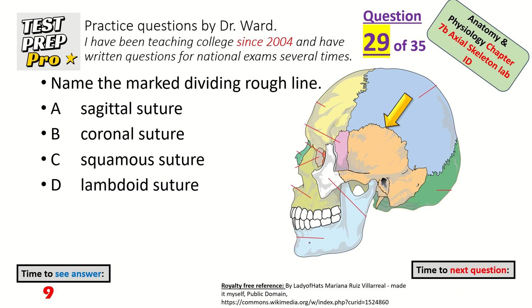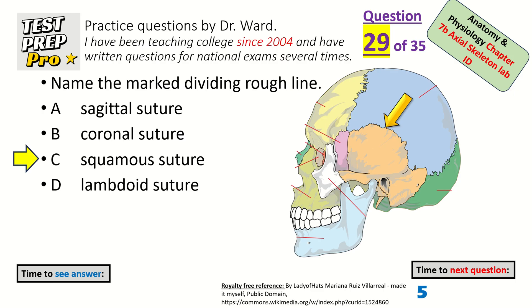Name the marked dividing rough line between the parietal bone and the temporal bone. Squamous suture.